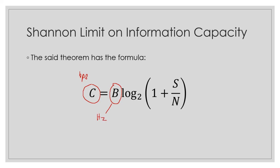Looking at S/N in the equation, S is the signal power and N is the noise power. The ratio of signal power to noise power is the signal-to-noise ratio. However, when using this formula, the signal-to-noise ratio must have units of watts, which means that if the given signal-to-noise ratio is in decibels, we must first convert it to watts before we can use the equation to solve for the maximum rate of data transmission.